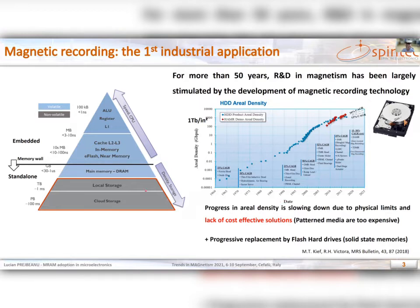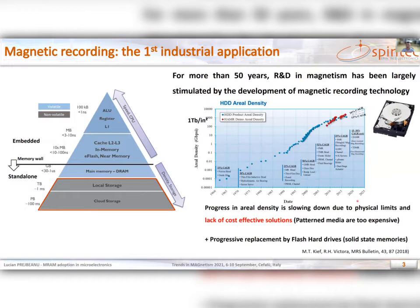It was possible to propose solutions in the memory hierarchy, namely for the bottom part, which represents dependence as a function of speed — slowest memories at the bottom, quickest at the top — and as a function of density, with denser memories at the bottom. Solutions for local storage and cloud storage with high densities were possible, while new solutions still need to be added to fast memories. Progress in aerial density is now slowing due to physical limits, and there is a progressive replacement by flash hard drives and solid state memories.